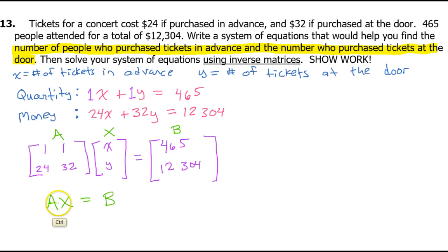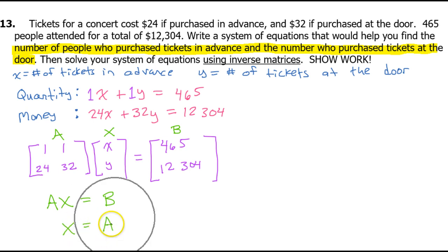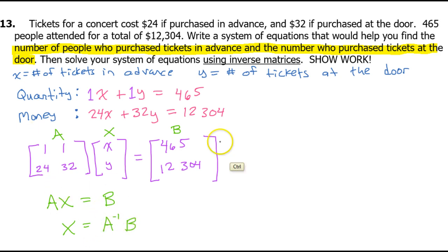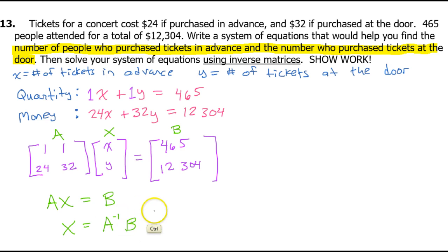To solve, matrix X equals A inverse times matrix B. All of this must be written down even though we're using a graphing calculator — everything shown is work you have to show. The rest will be done in the calculator.